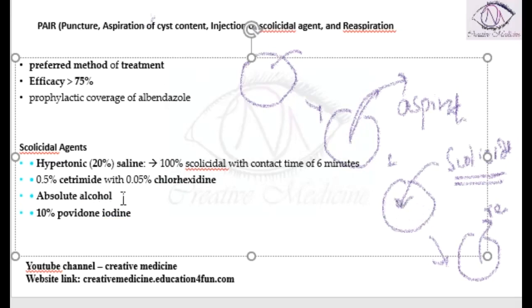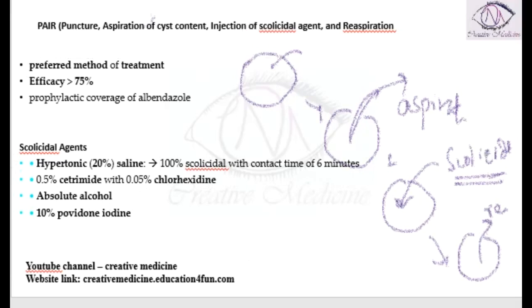0.5% cetrimide with 0.05% of chlorhexidine can also be used. Absolute alcohol can be used and 10% povidone iodine can be used as scolicidal agents.